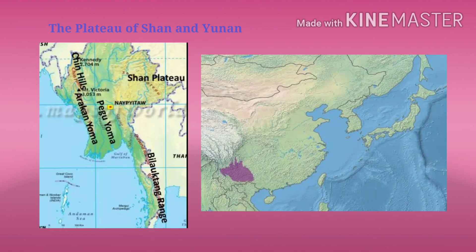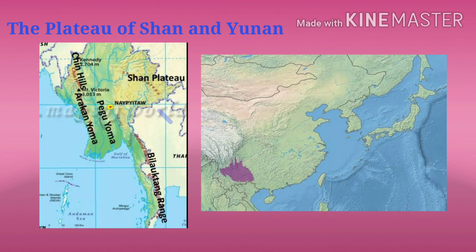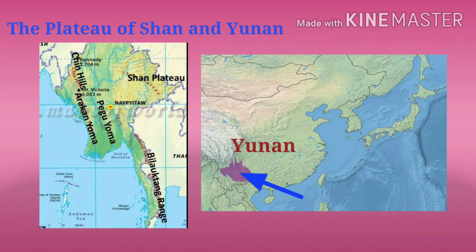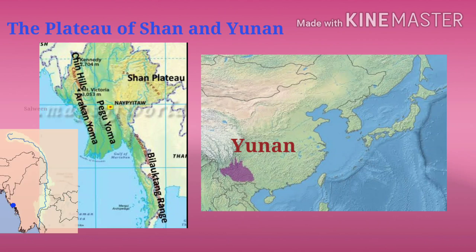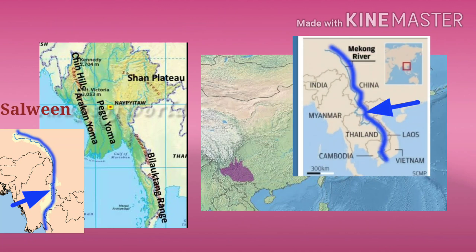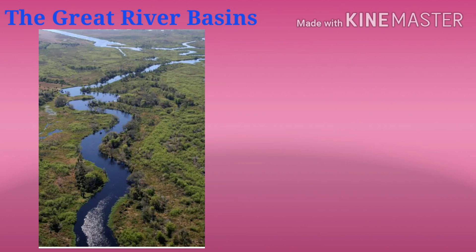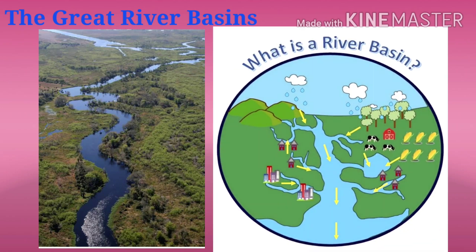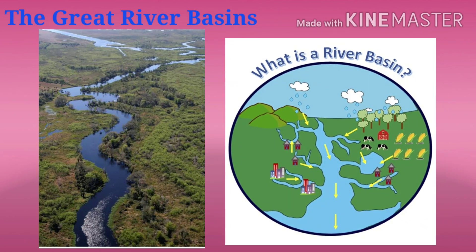The third one is the Plateau of Shan and Yunnan. It lies in the Shan state of Myanmar and Yunnan state of China. The rivers that flow through these plateaus are Salween and Mekong. The next physical feature is the Great River Basins. A river basin is an area of land which is drained by a river and its tributaries.